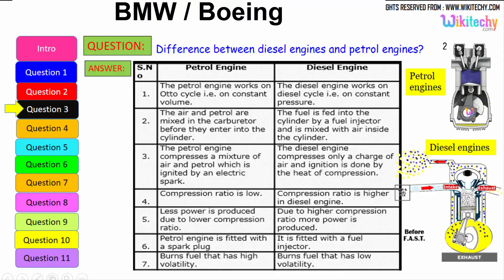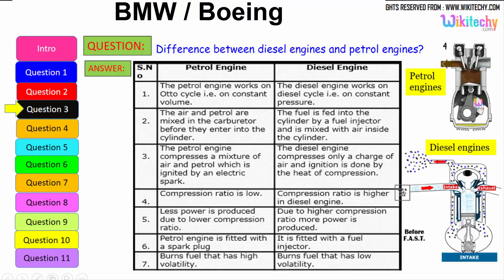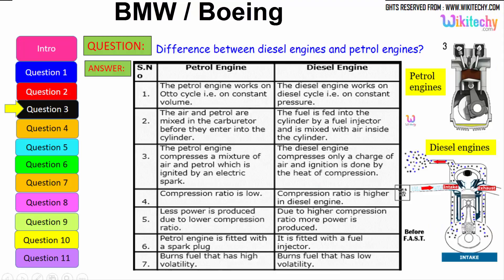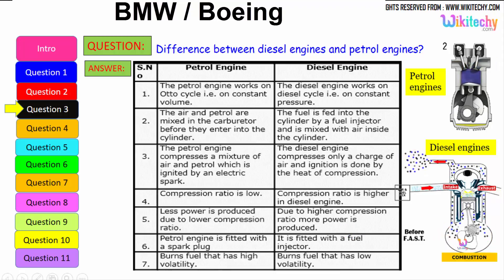The petrol engine compresses a mixture of air and petrol which is ignited by an electrical spark. The diesel engine compresses only a charge of air and ignition is done by the heat of compression. The compression ratio is low in a petrol engine whereas it is higher in a diesel engine. Less power is produced due to the lower compression ratio; a higher compression ratio produces more power. The petrol engine is fitted with a spark plug, whereas the diesel engine is fitted with a fuel injector.